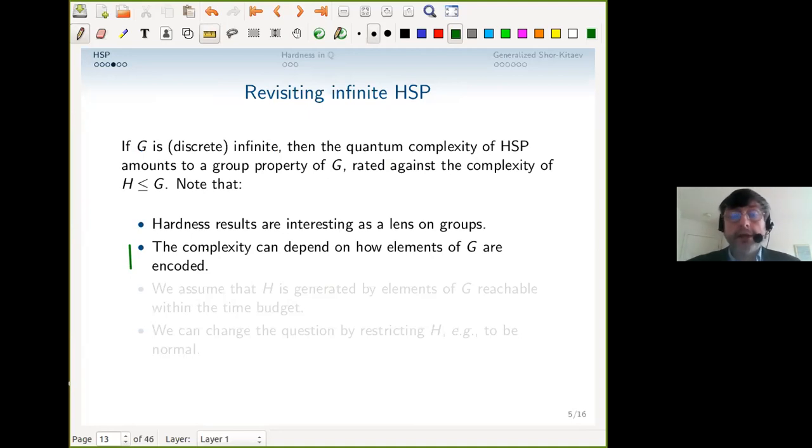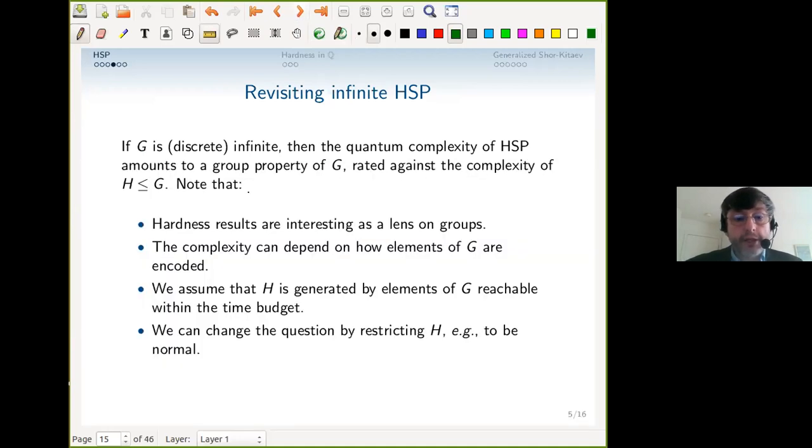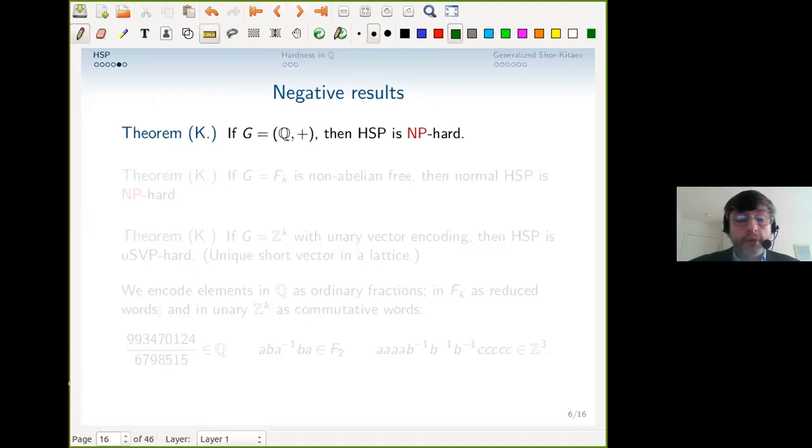It's not just a group problem—it depends on how elements of G are encoded, although in some cases there are canonical encodings. It's not really fair for H to have generators far out beyond where you can look. Even for Shor's algorithm, there's an assumption that you can reach the elements of H within the time budget. You can also change the question with restrictions on H, like normal H.